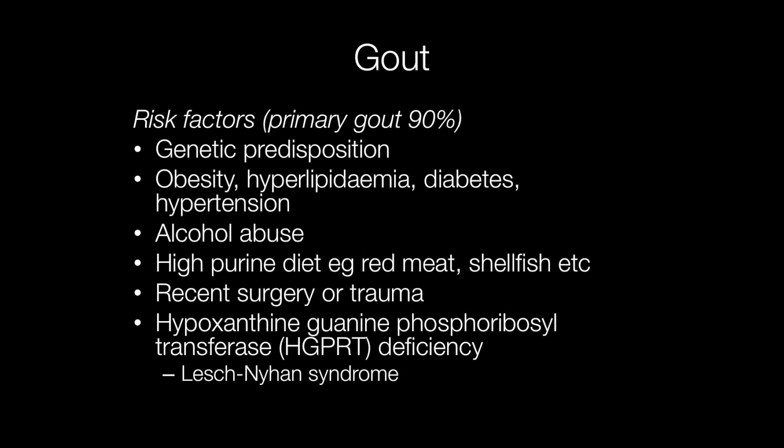Gout may be subdivided into primary and secondary. In primary gout there is often a genetic predisposition. Risk factors include obesity, hyperlipidemia, diabetes, hypertension, alcohol abuse, and a diet high in purines — for example, red meat and shellfish. An episode of gout can also be sparked by recent surgery or trauma.